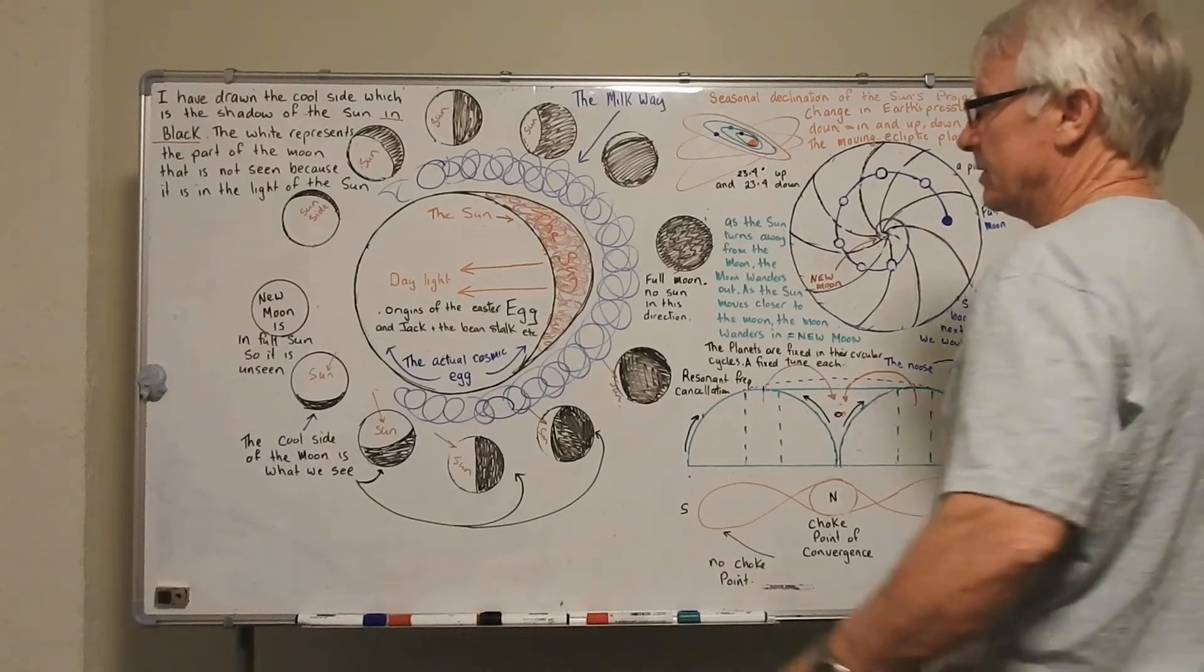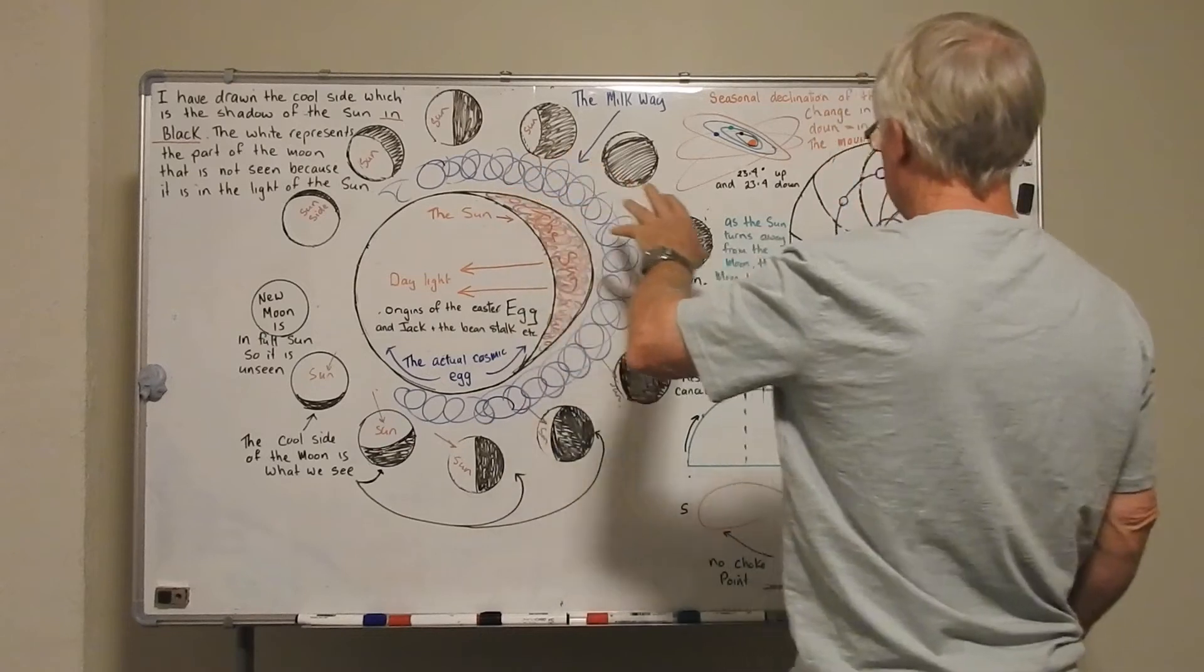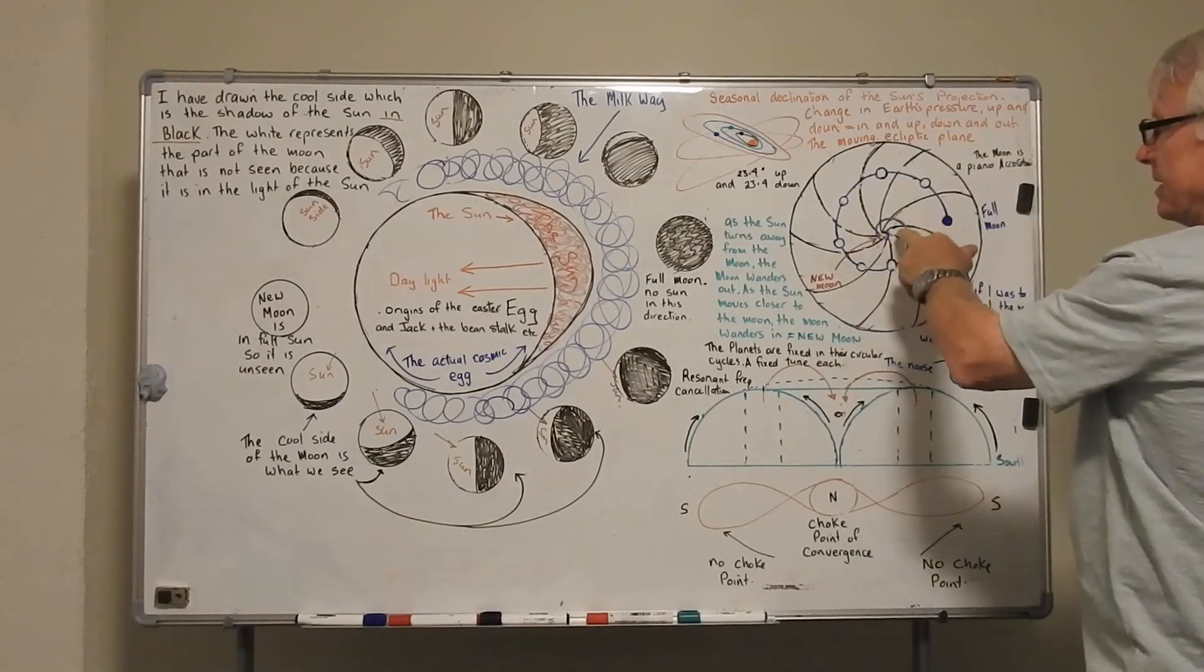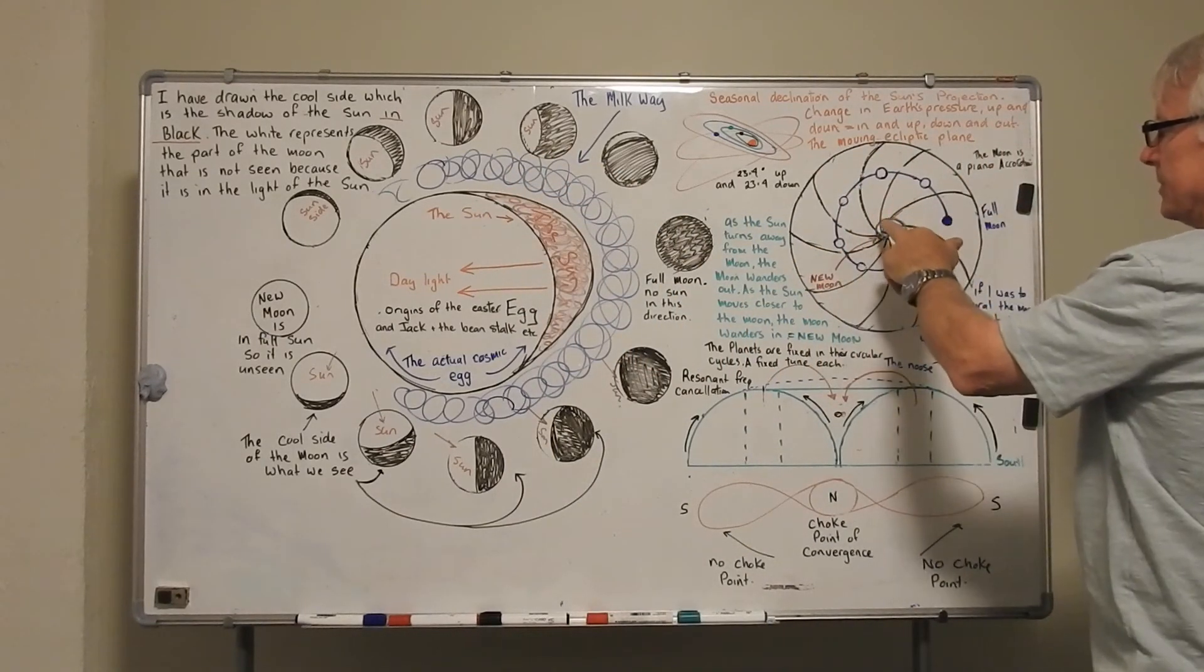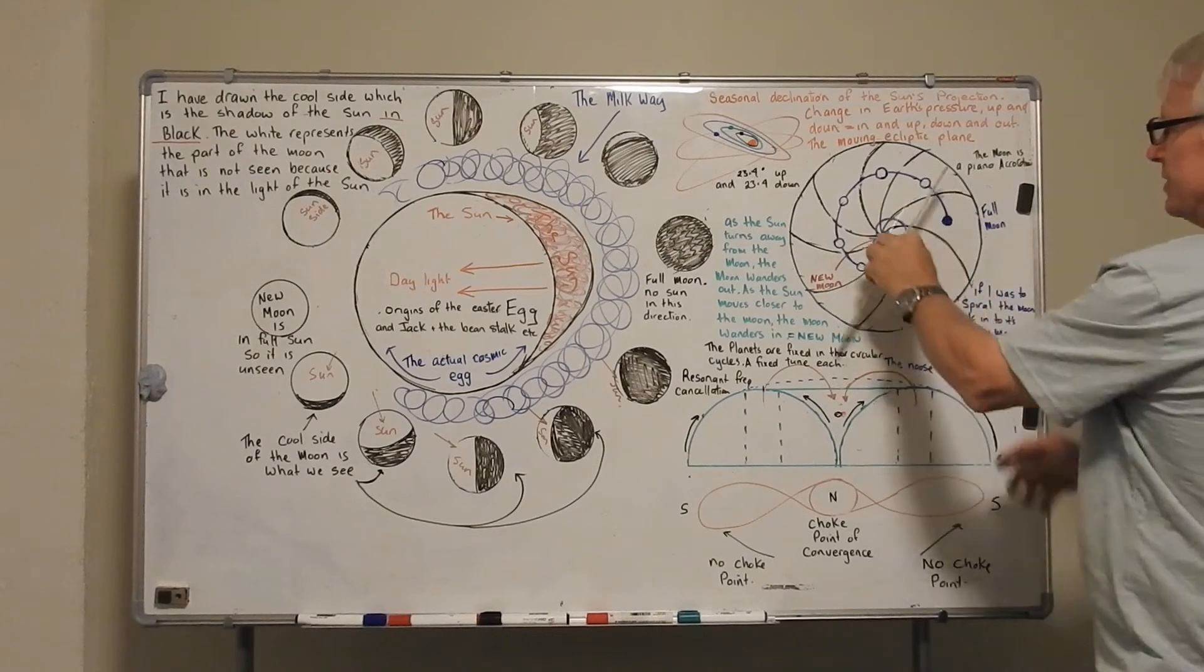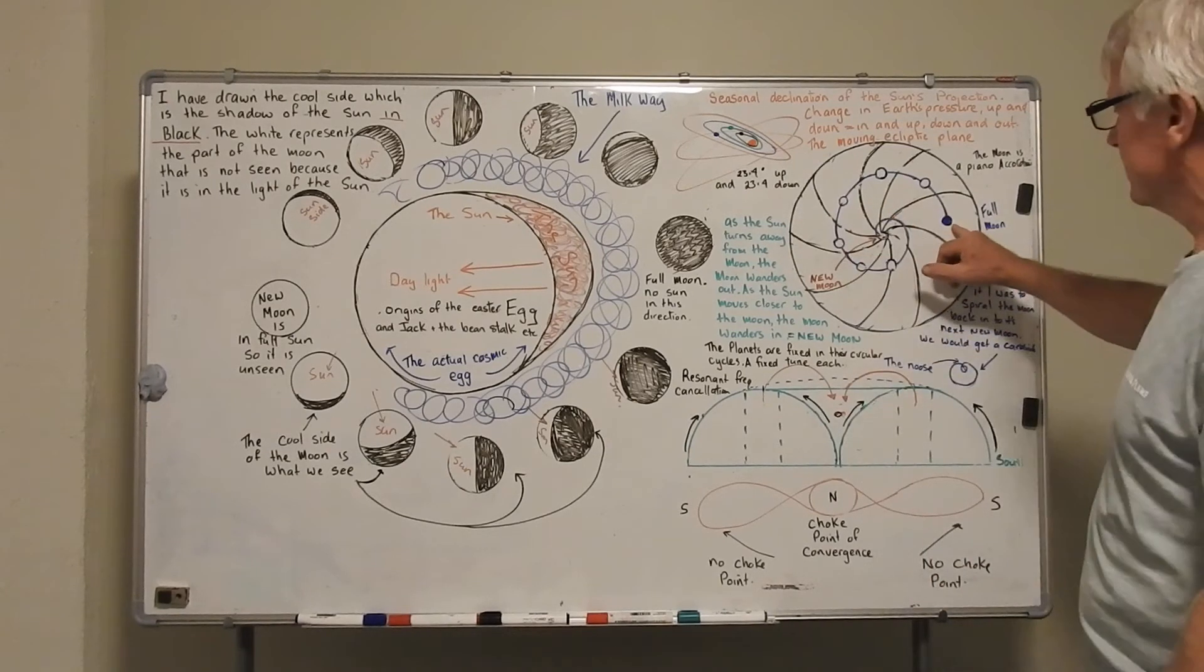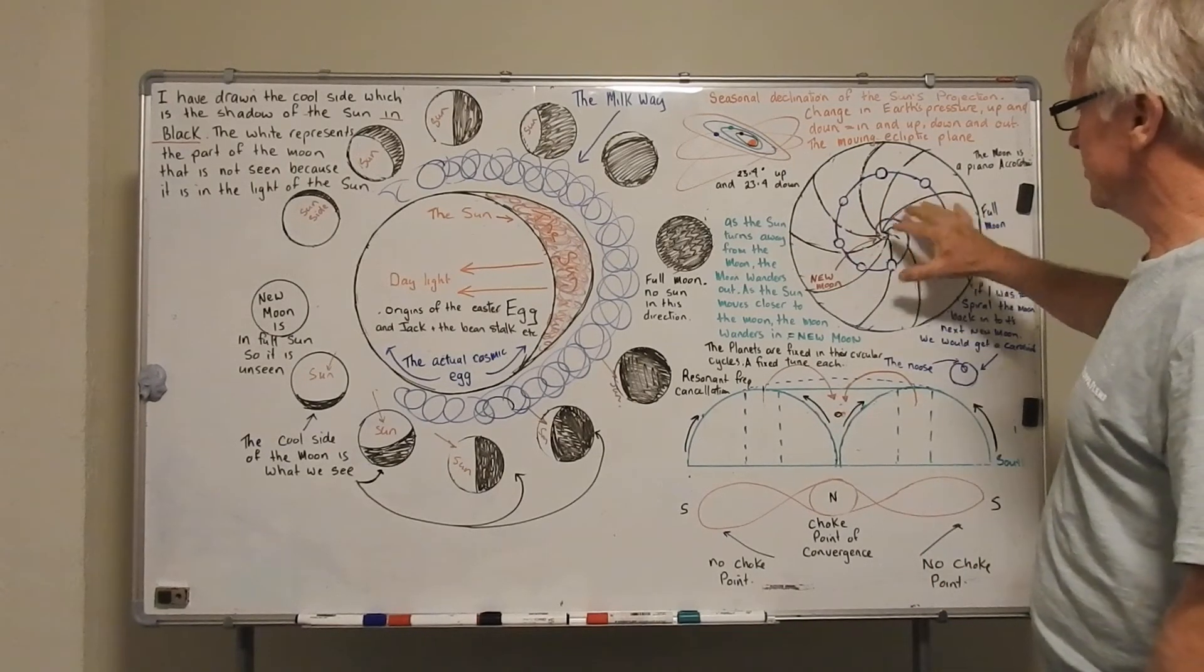As long as you understand the sun moves quicker, passes everything. Planets don't go around the sun, the sun catches up to them. The moon doesn't go around the sun, the sun catches up to them. The projection that is. The projection. And the moon. The moon is a projection too. Everything is a projection.